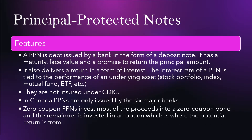So we are going to start off by looking at principal protected notes and their various features. A PPN is a debt issued by a bank in the form of a deposit note. It has a maturity date, a face value, and a promise to return the principal amount. It also delivers a return in the form of interest, and that interest rate is tied to the performance of an underlying asset — whether it be a stock portfolio, index, mutual fund, ETF, etc.